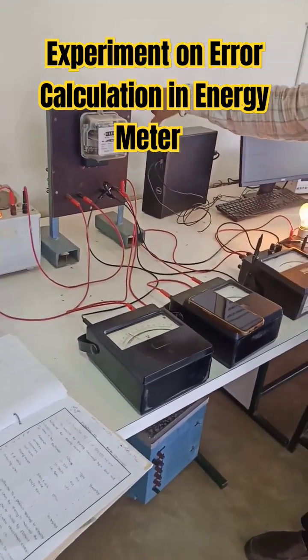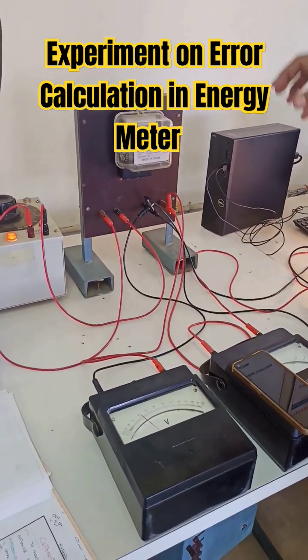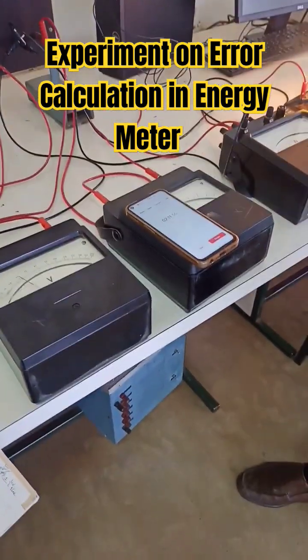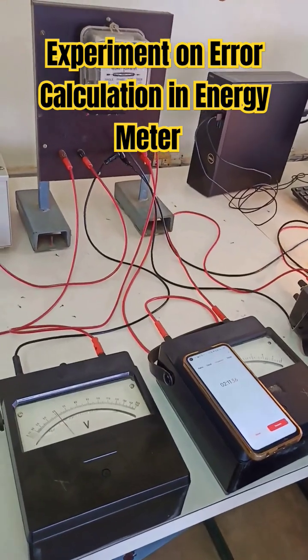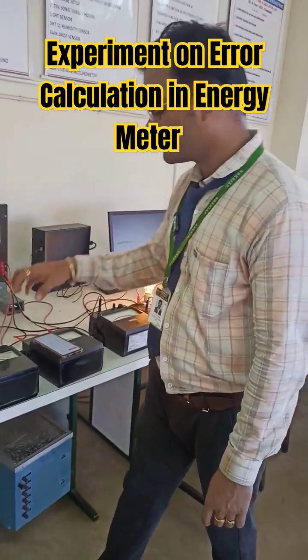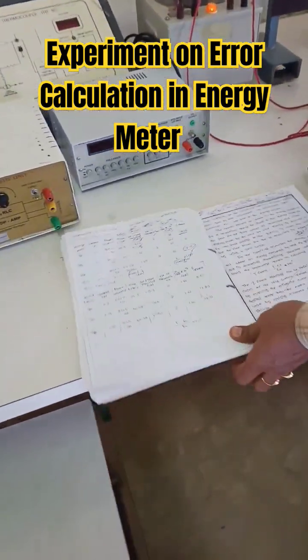You can see here our disc is rotating. For every two revolutions, you have to write down the energy consumed or the time taken. You can have a stopwatch. Already we have done the complete experiment - the time taken by the disc to make two revolutions. We have to tabulate all this in a tabular column.